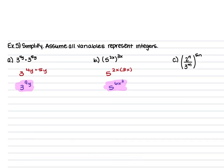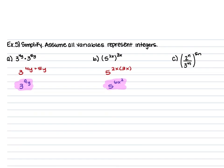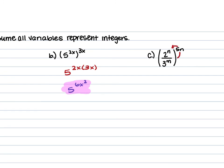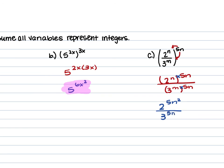For example c, we have 2 to the power of n over 3 to the power of m, all raised to the power of 5n. This 5n goes to both the numerator and the denominator: 2 to the n raised to the 5n over 3 to the m raised to the 5n. We multiply those powers since we have a power raised to a power. n times 5n is 5n squared, and m times 5n is 5mn. So the final answer is 2 to the power of 5n squared over 3 to the power of 5mn.